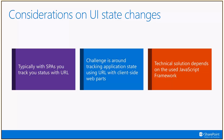In a SPA you can track the state of your app — which view you're looking at — using the hash in the URL. But when you build a web part, you have to take into account that the web part is added to the page not by you but by a user, and they can add one, two, three, or more. If you use the URL to track the state of your web part, you could actually collide with other elements on the same page.